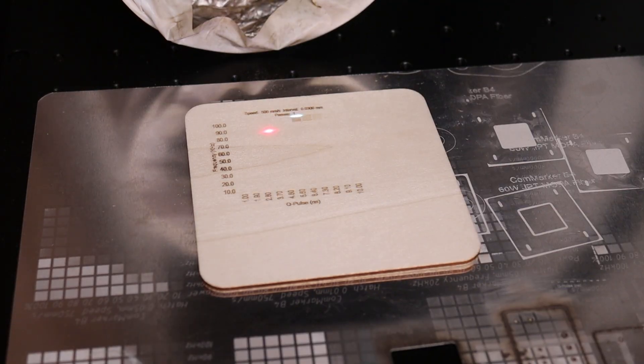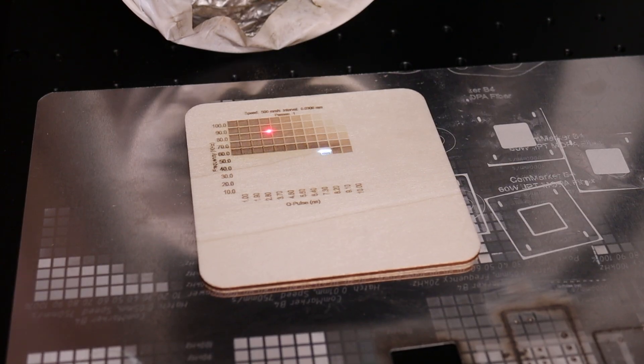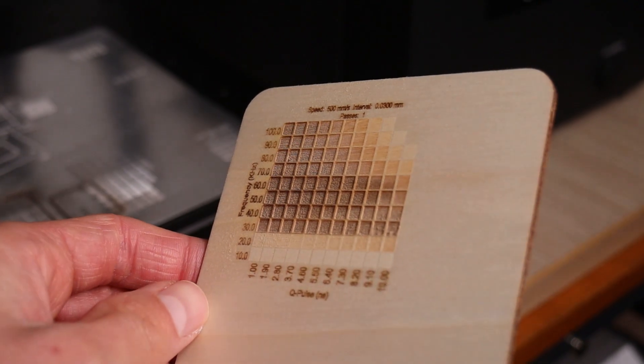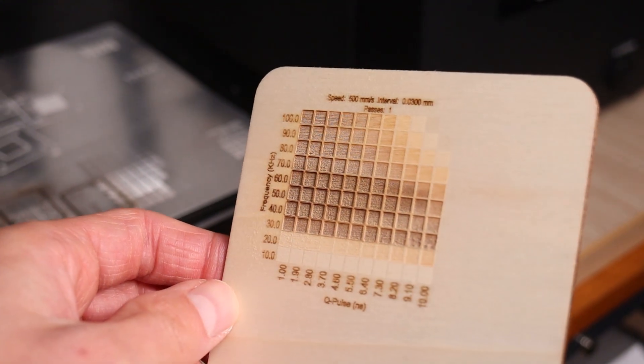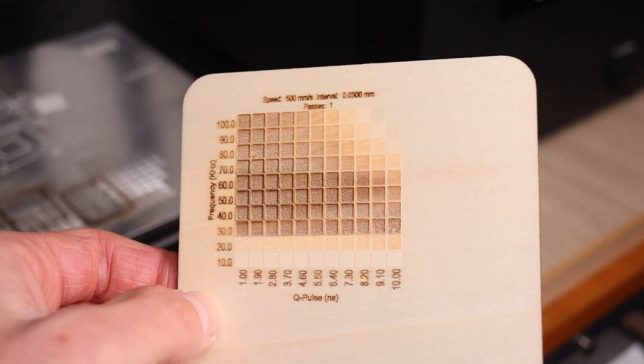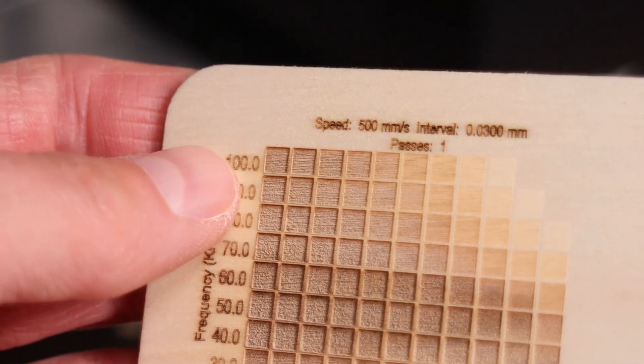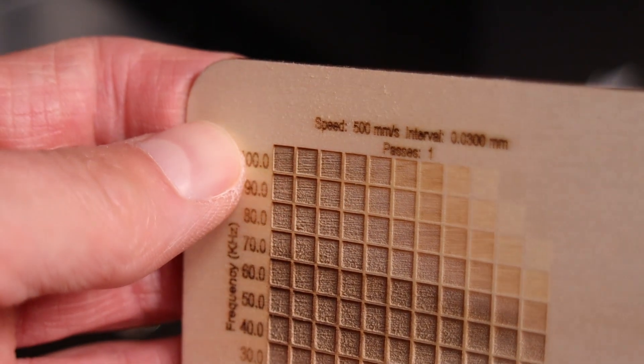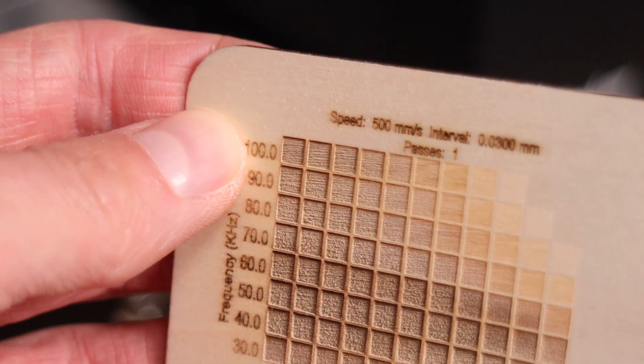Next, I tested how well the CommMarker Omni performs at engraving plywood. I engraved a simple test pattern, which varies the frequency and the Q-pulse width, which is in my opinion the best test pattern for UV lasers. It appears that the 40 to 60 kHz frequency range delivers the deepest engravings. At higher frequencies, the engraved areas become smoother, which is visually appealing, especially for deep engraving work.